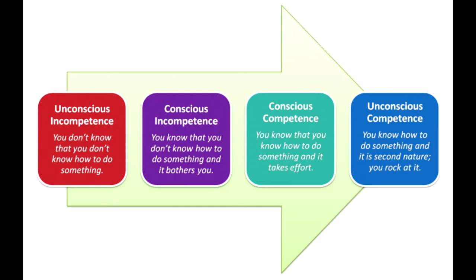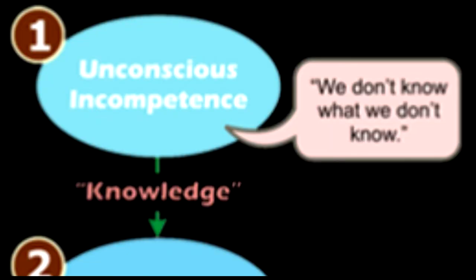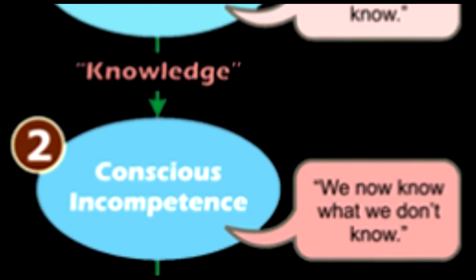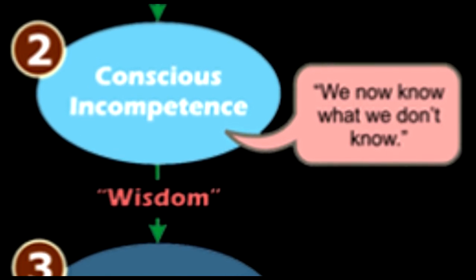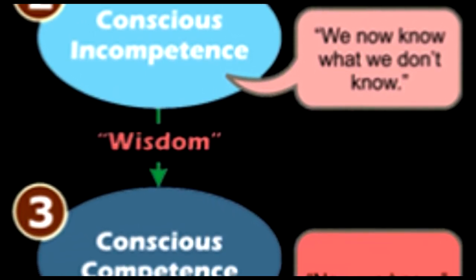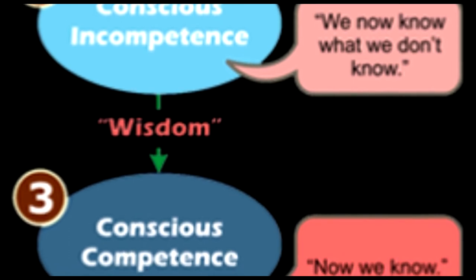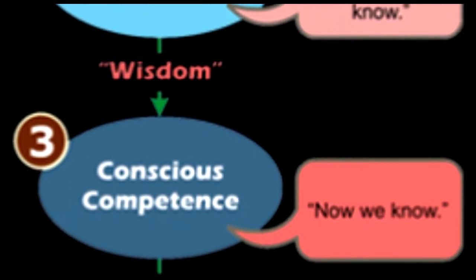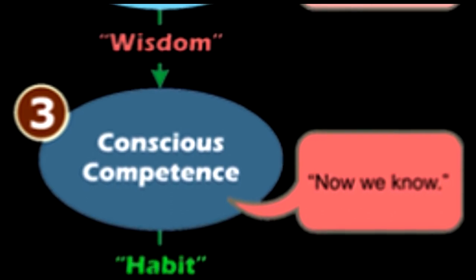I think this graph is very helpful. It talks about how we all start in unconscious incompetence — we don't know what we don't know. From there we move into conscious incompetence: we know what we don't know, but we don't know how to get out of it. Eventually, with a lot of work and good resources, we move into conscious competence.